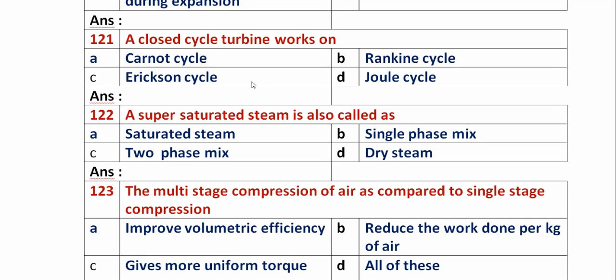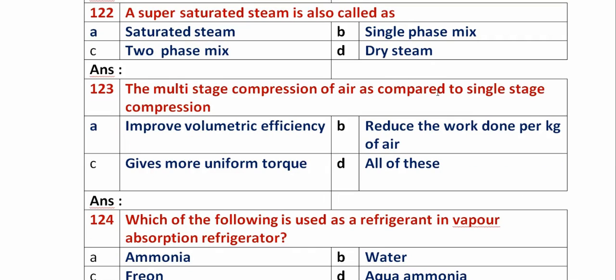Question 121: A closed cycle turbine works on which cycle? Option A: Carnot cycle. Option B: Rankine cycle. Option C: Ericsson cycle. Option D: Joule cycle. A closed cycle gas turbine works on the principle of Joule cycle, so option D is the right answer.